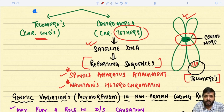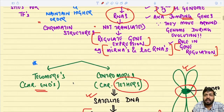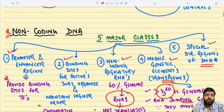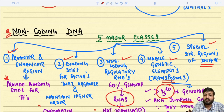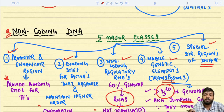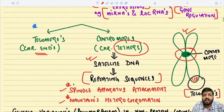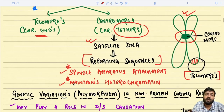To summarize the five important non-coding DNA classes: promoter/enhancer binding sites, chromatin structure binding sites, non-coding regulatory RNAs (micro RNA and long non-coding RNAs), mobile genetic elements (jumping genes or transposons), and special structural regions containing telomeres and centromeres. The importance of telomeres and centromeres will be discussed in detail later.